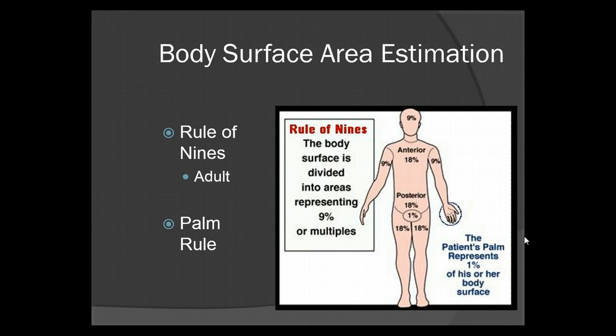You can also use the palm rule, where the patient's palm represents 1% of his or her body surface. Either one of these is acceptable — one is not more correct than the other. However, with the rule of nines you have to keep in mind the difference between adult and child, and we'll go over the child in just a moment.